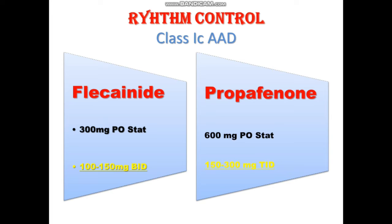Another class used for rhythm control in atrial fibrillation is class 1C antiarrhythmic drugs. There are two drugs to mention: flecainide and propafenone. Their dosages can be referenced from the slide.